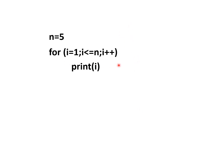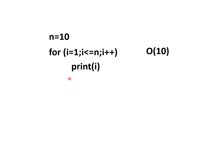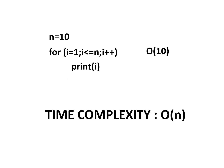Now consider this program with a for loop that runs from 1 to n. When n equals 5, the print statement executes 5 times. When n equals 10, it executes 10 times. The time complexity varies with n, so the time complexity of this program is O(n).